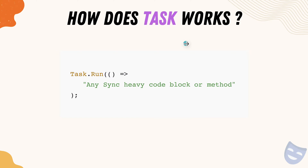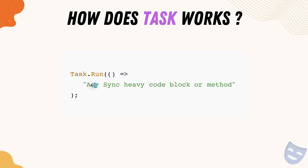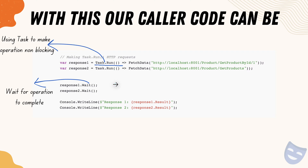How does Task really work? There is a Run method in Task which is going to run any synchronous heavy code block or methods inside it. All you have to do is call Task.Run and then use a lambda expression, otherwise called a delegate, to run the method you are trying to run. This is how you use the Task.Run method to run non-synchronous code. You can port your existing code — the FetchData method — into Task.Run to make the response non-blocking.